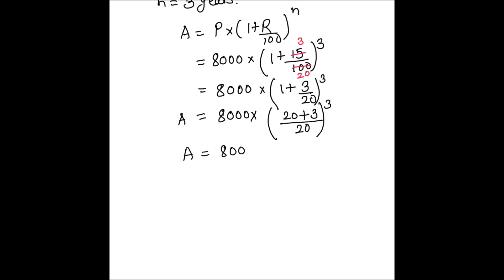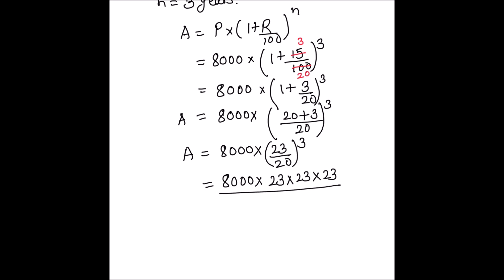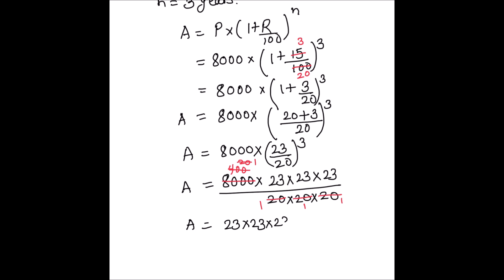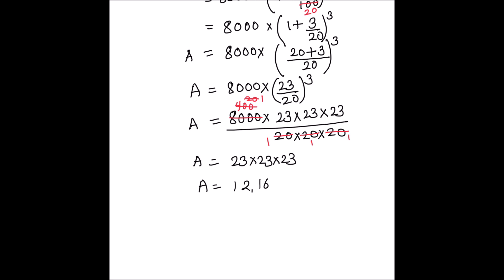So amount equals 8000 times (23/20) whole cubed, which is 8000 times (23 times 23 times 23) divided by (20 times 20 times 20). Now 8000 and 20 (in the denominator) share a common factor — simplifying, 8000 divided by 20 cubed gives us 1, and we are left with 23 times 23 times 23.